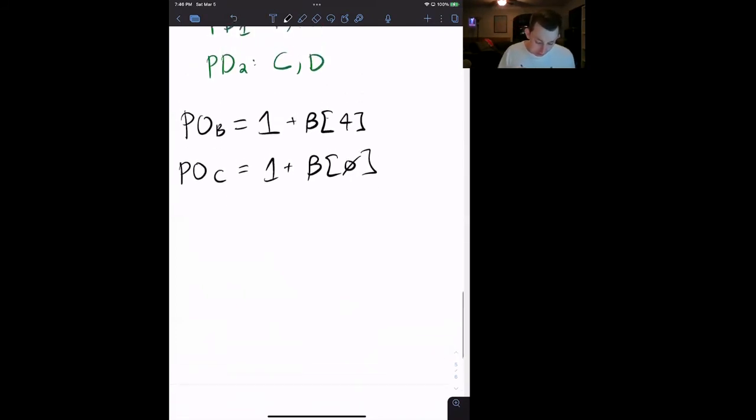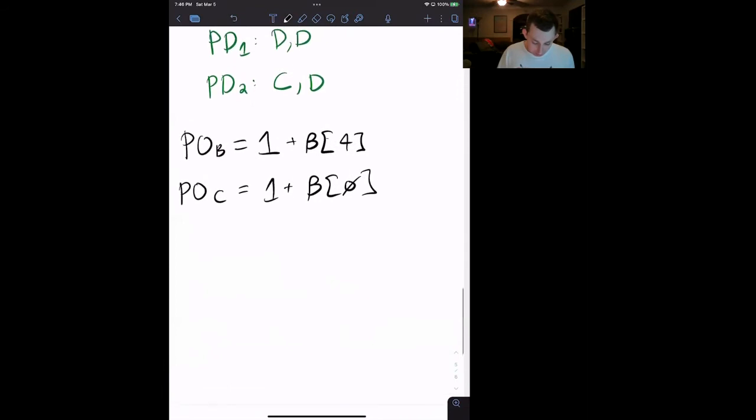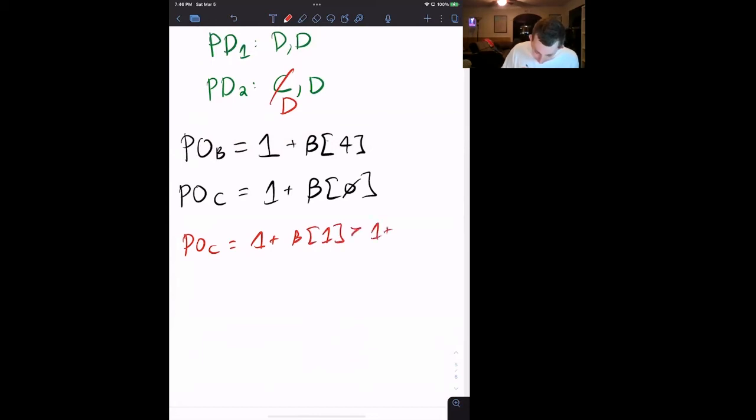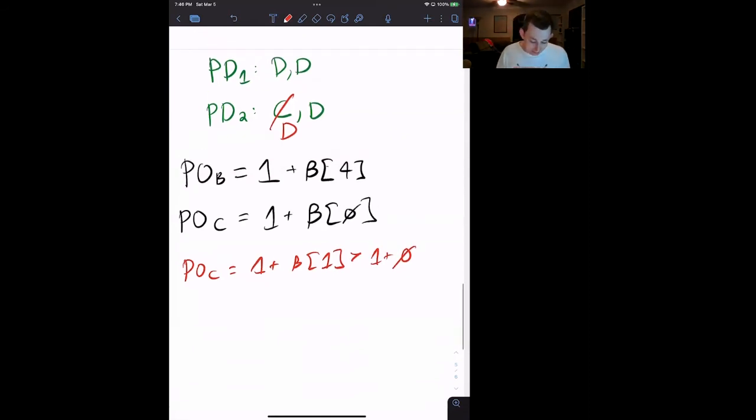Now, when we're thinking about a finite repeated game, the question is, could Clyde, who's playing cooperate in the second round, do better by playing defect both times? And the answer, unsurprisingly, is yes, because if he played defect instead, then the payoff to Clyde would be one plus beta times one, which is better than one plus zero, which is what he's currently getting. So you can imagine that it is always going to be better to play defect in any finite number of rounds of the Prisoner's Dilemma.